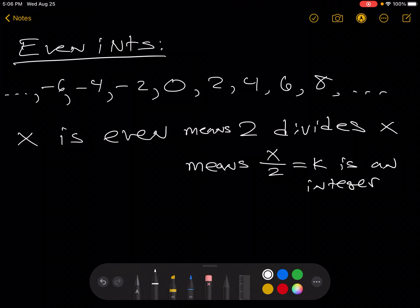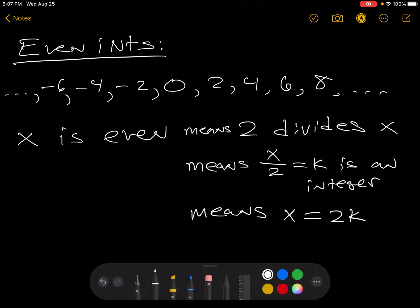That's the definition of divides. Remember, divides is the more formal way of thinking divides evenly. Now if we multiply both sides by 2, this means x equals 2k, where k is an integer.